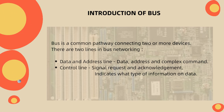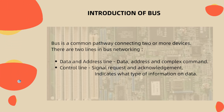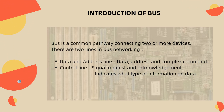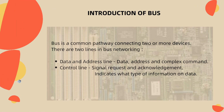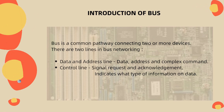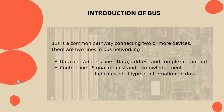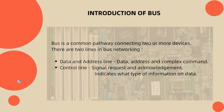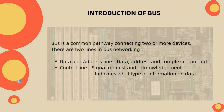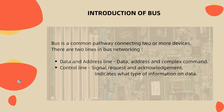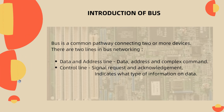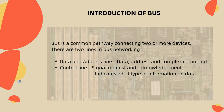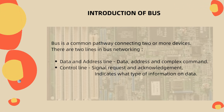There are two lines in bus networking. The first one is the data and address line, through which data, address, and complex commands are given. The second one is the control line, where signal request and acknowledgment is done, indicating what type of information is on the data line.